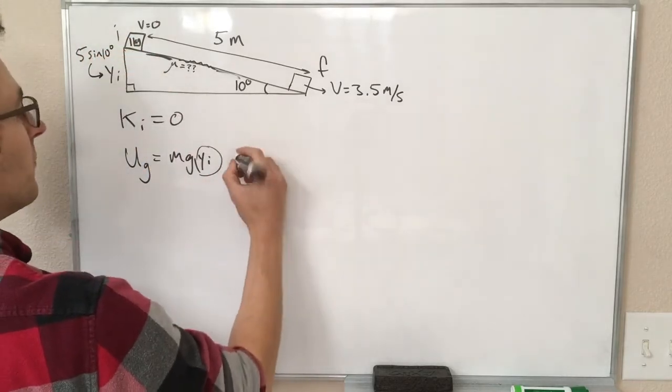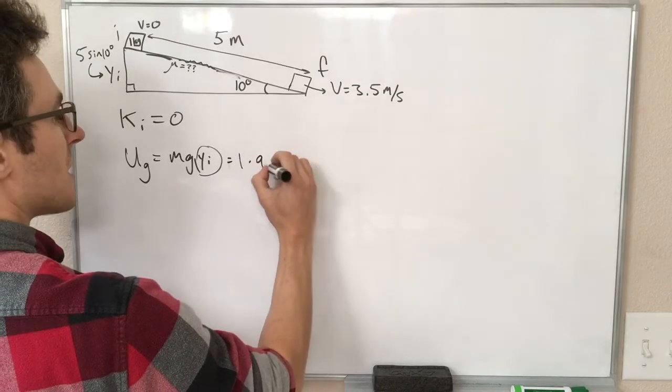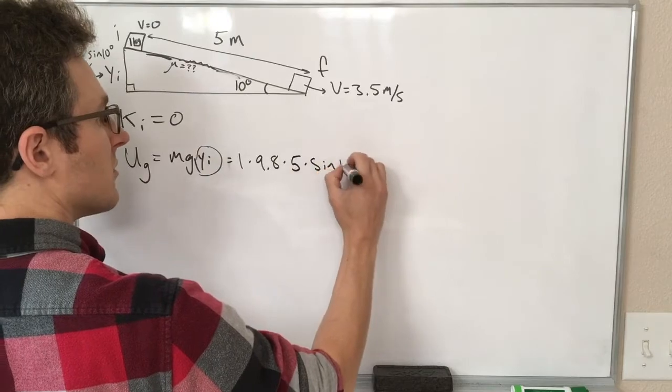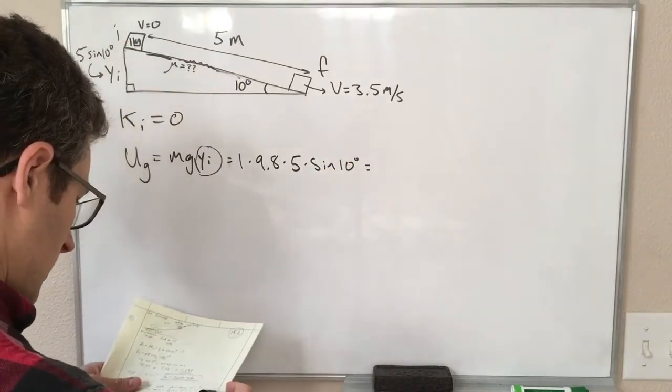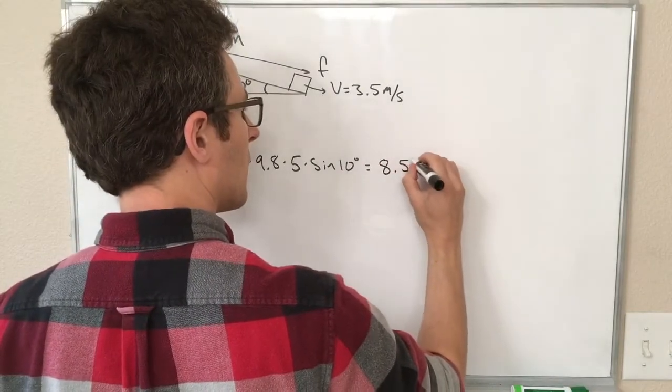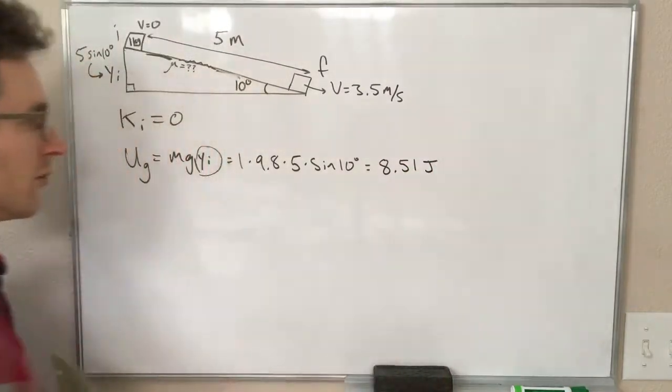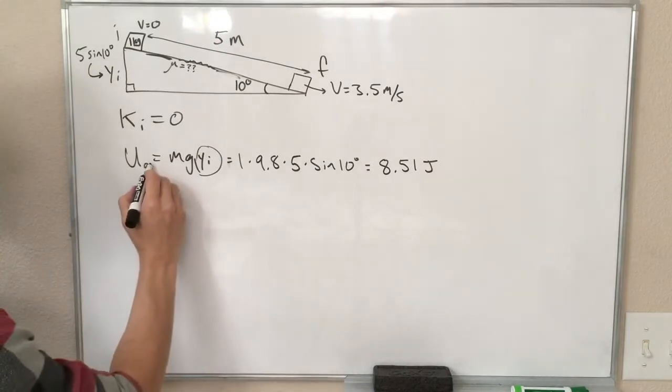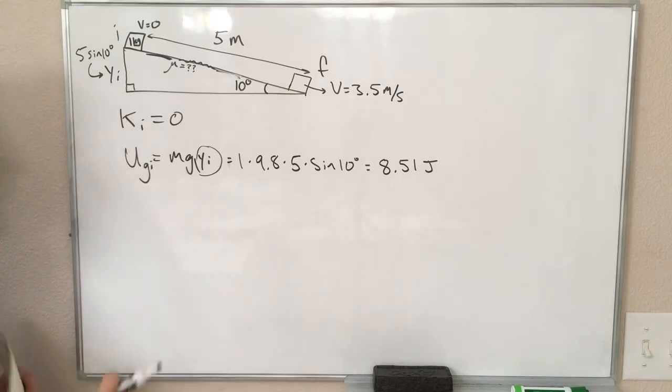So this is equal to 1 kilogram times 9.8 times 5 times the sine of 10 degrees. If we put that into our calculator, we get 8.51 joules of gravitational potential energy. And that's all the energy we have at the beginning, and I guess I need an i on that also.